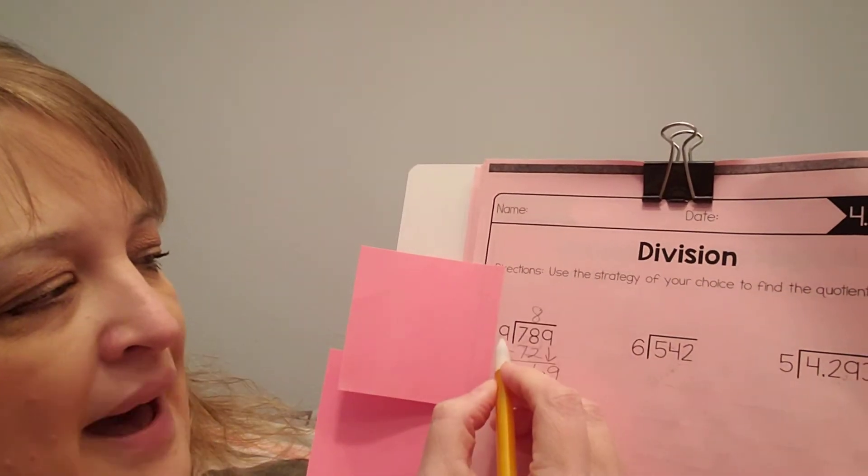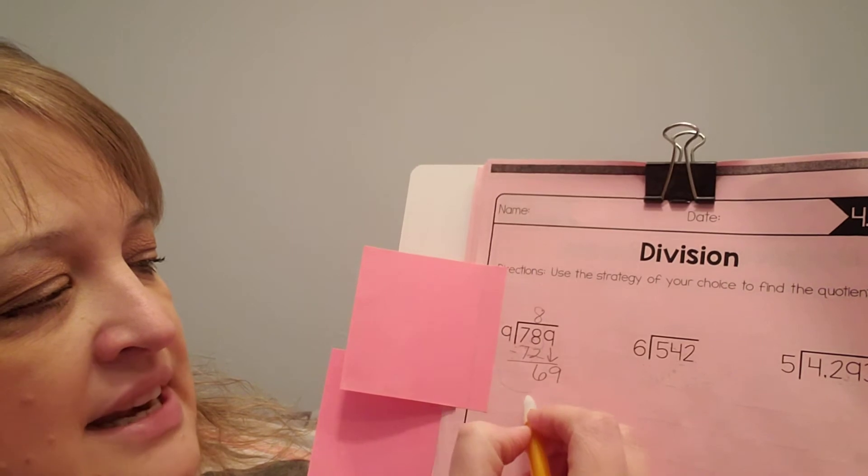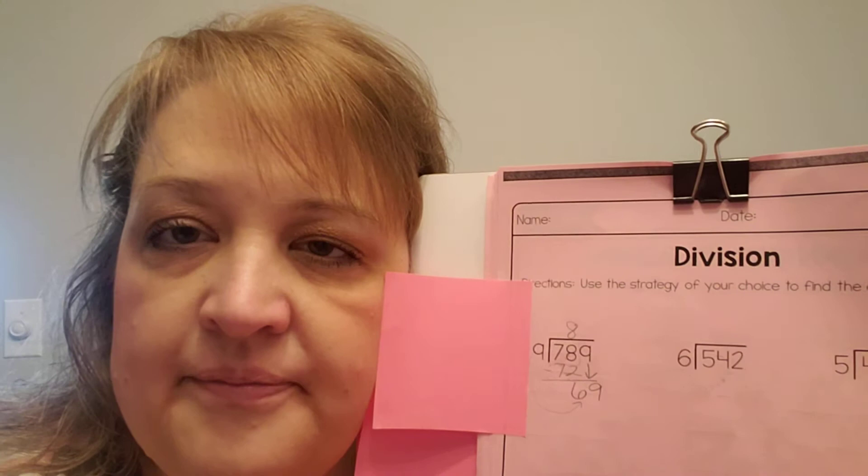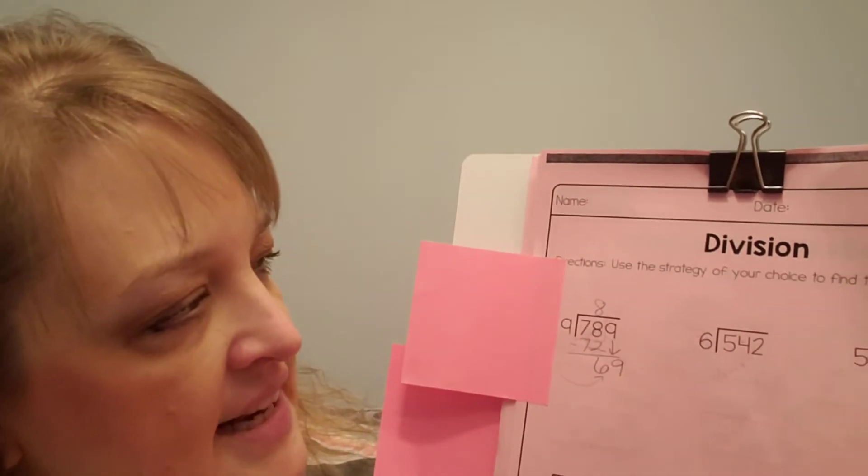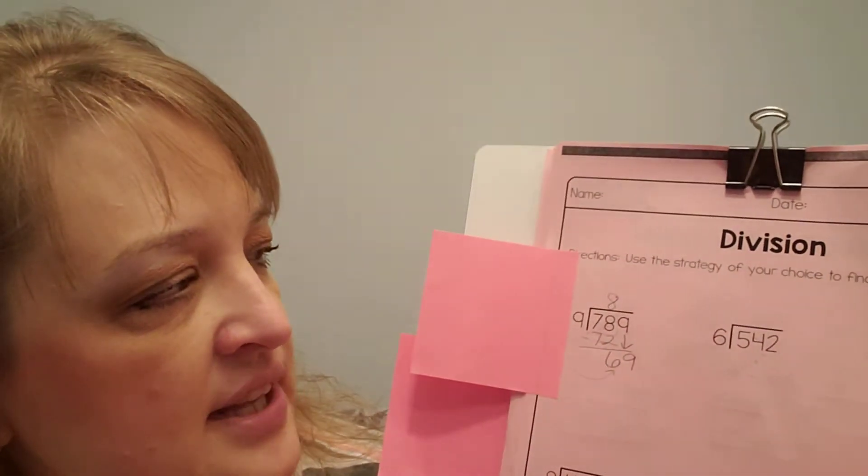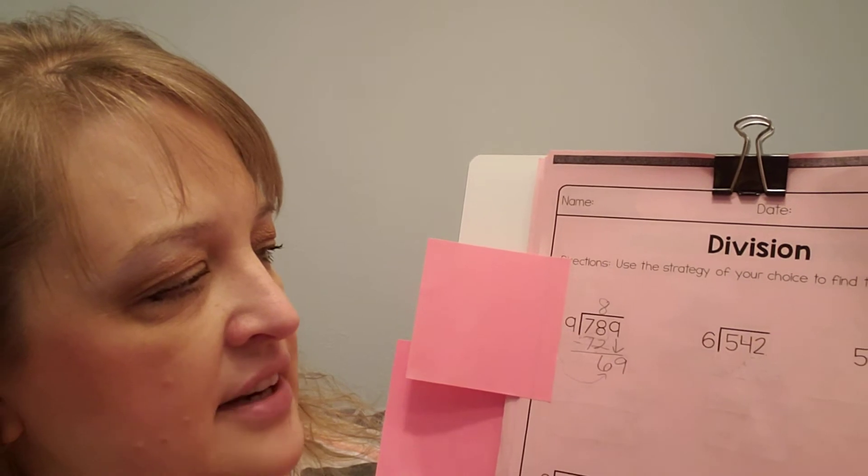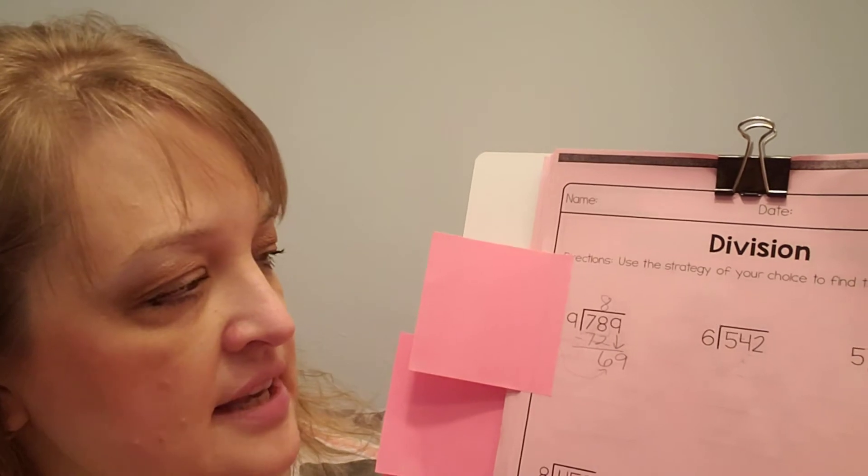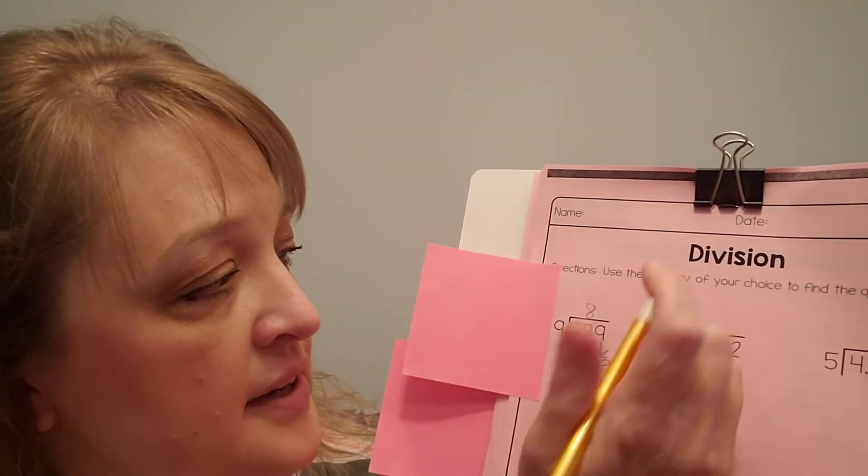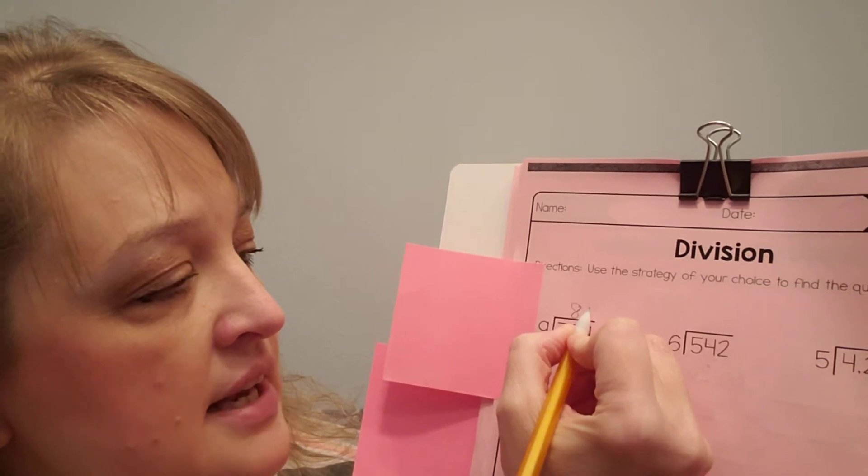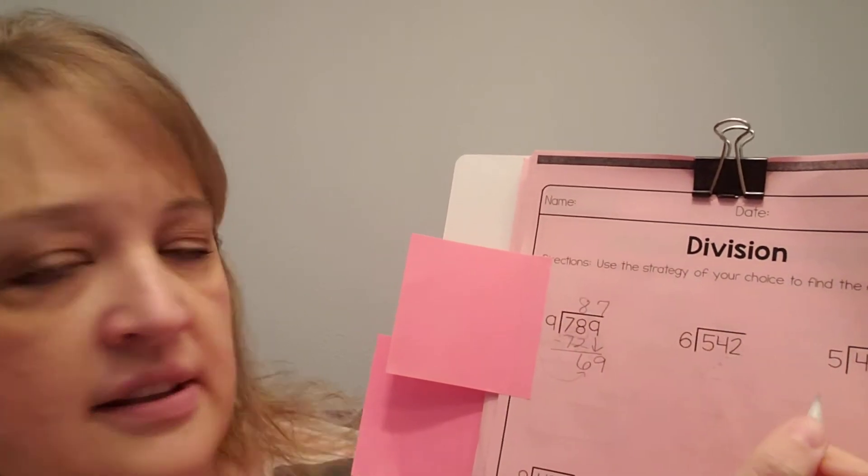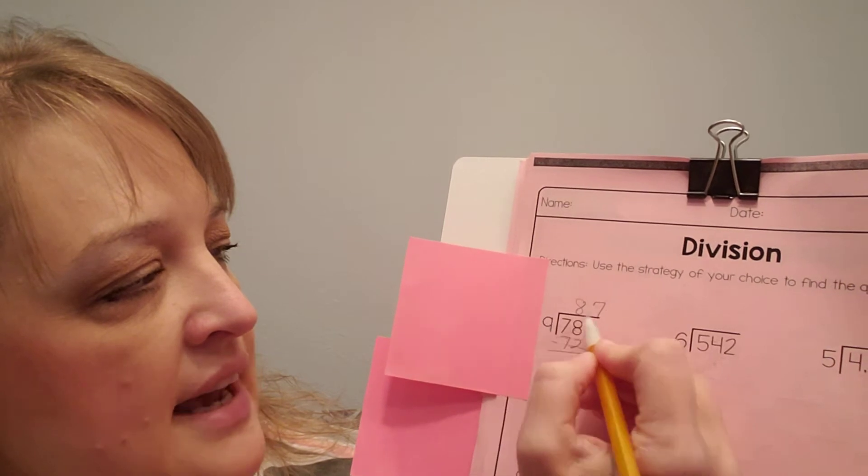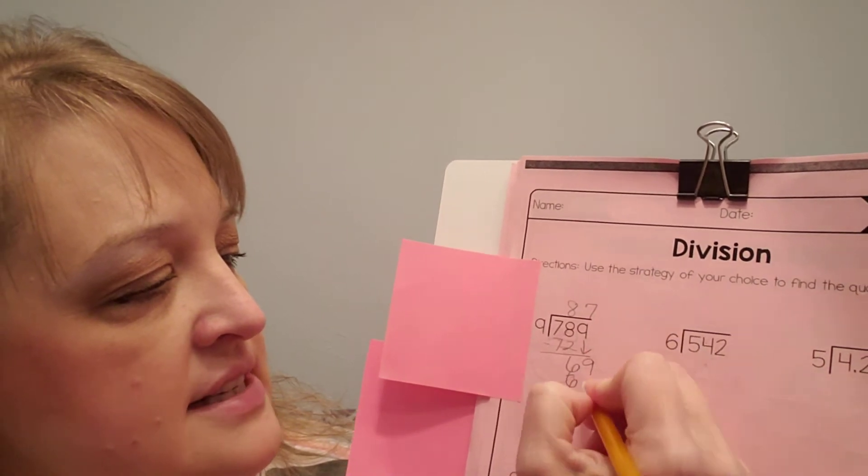Okay, now I'm going to go back to division. How many 9s are in 69? Well, if I did 8, that was 72. That's too much. So what if I did 7? 9 times 7 is 63. That's as close as I can get to that without going over.